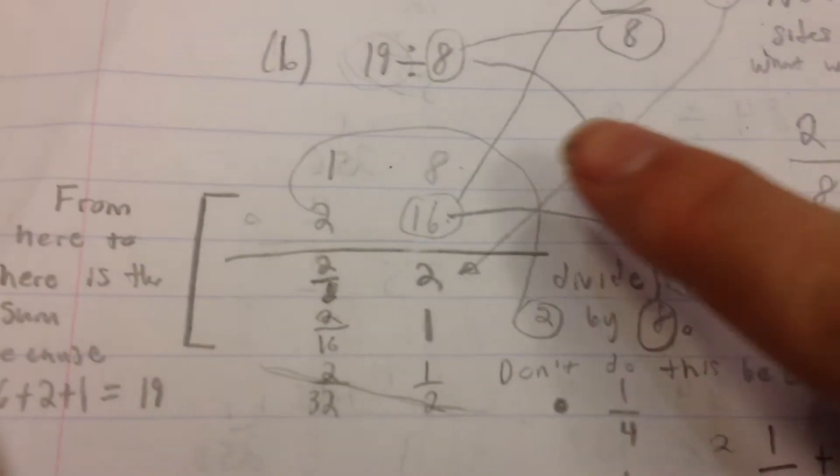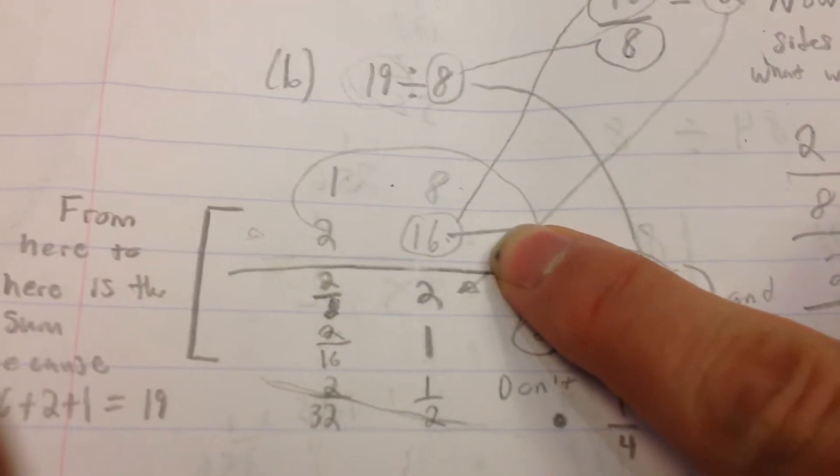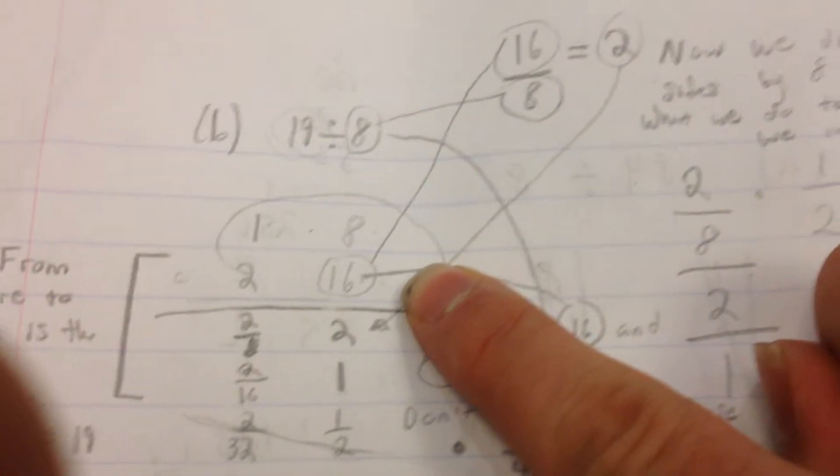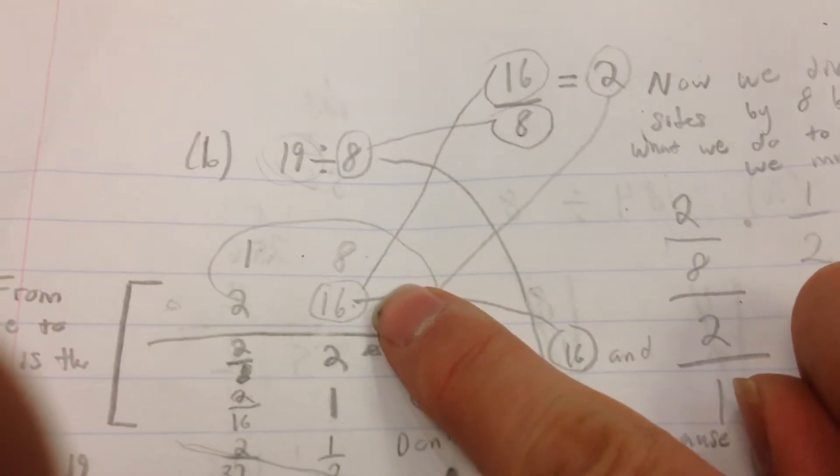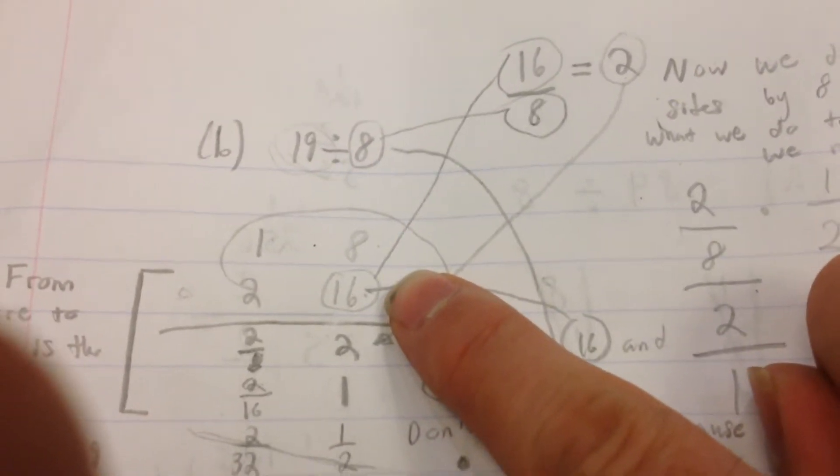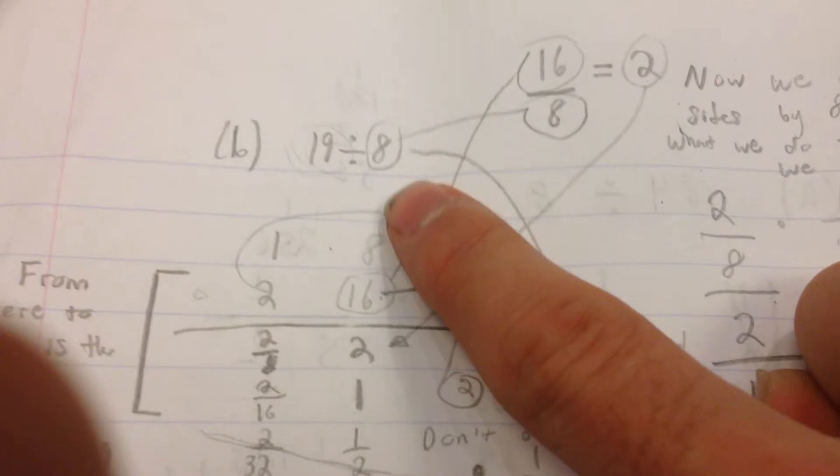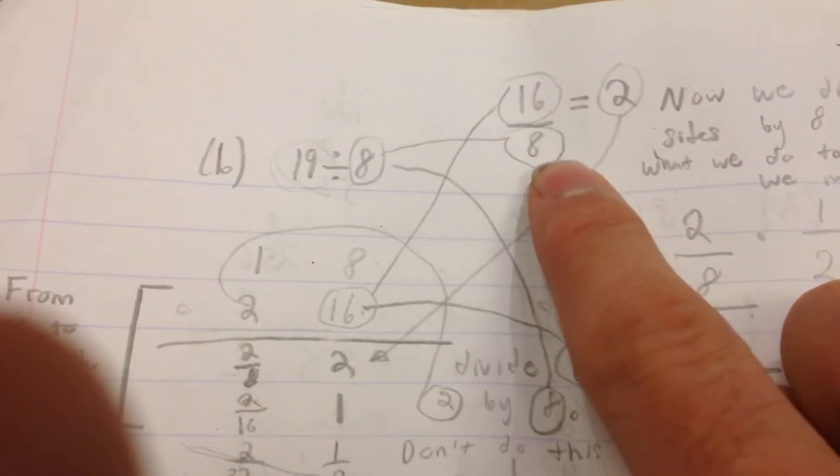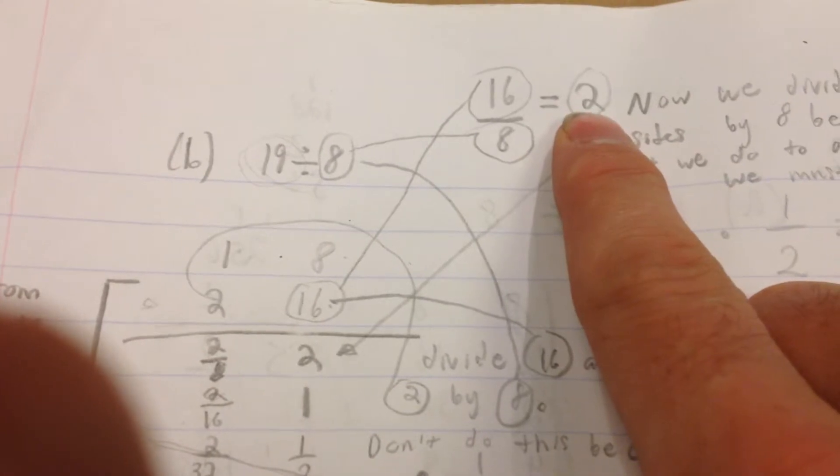Now, once you do that, you stop again. So we have that 16 is going to be divided by 8. So 16 divided by 8 is equal to 2.